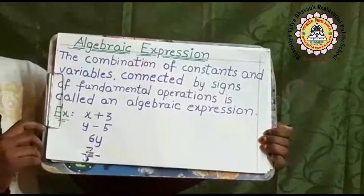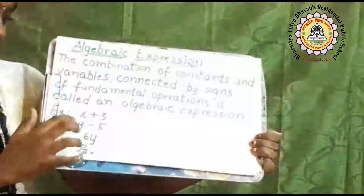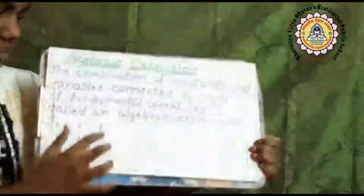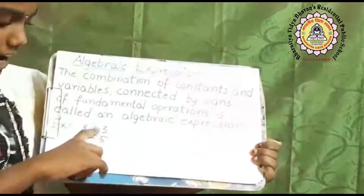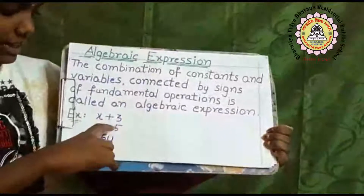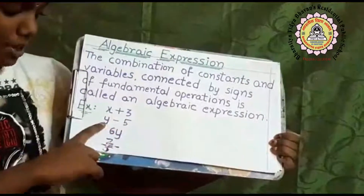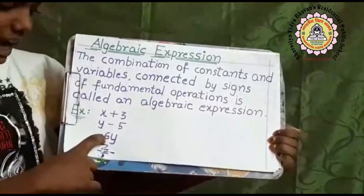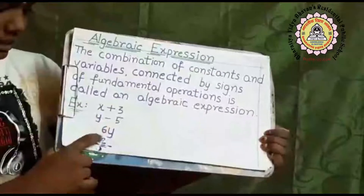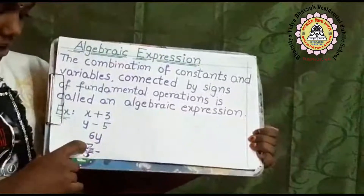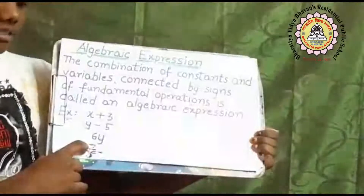Algebraic expression: the combination of constants and variables connected by the signs of fundamental operations is called an algebraic expression. Examples are: x plus 3 is an algebraic expression formed by addition. y minus 5 is an algebraic expression formed by subtraction. 6y is an algebraic expression formed by multiplication. z by 5 is an algebraic expression formed by division.